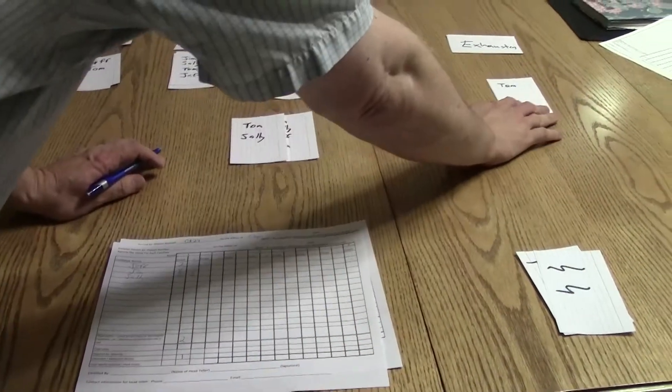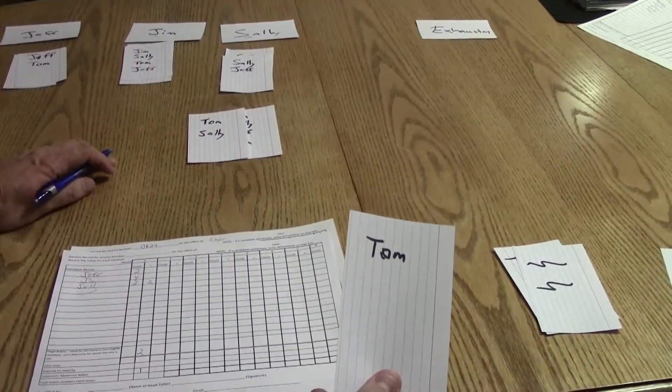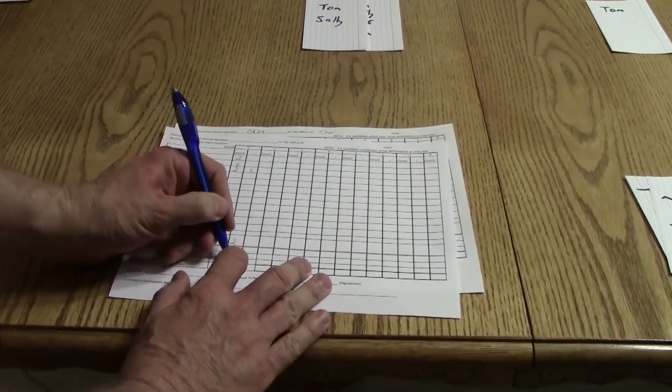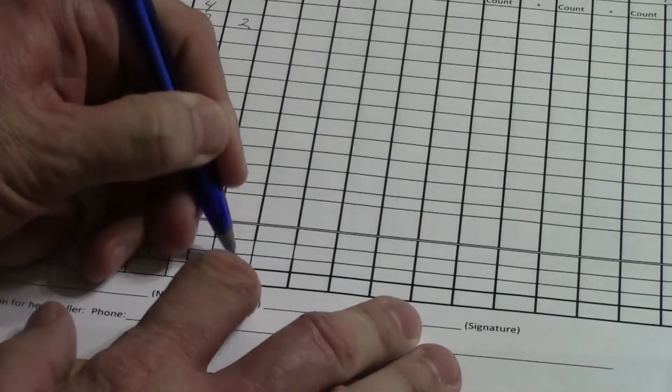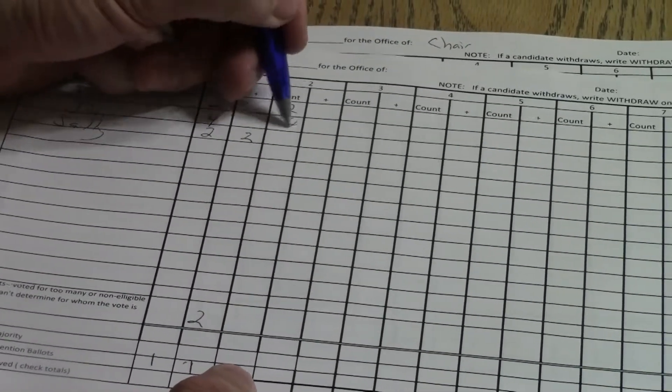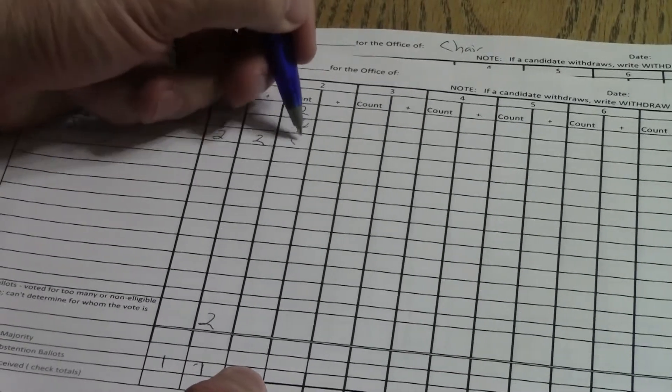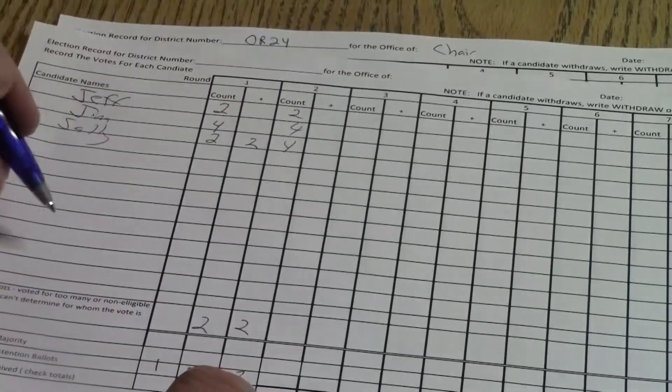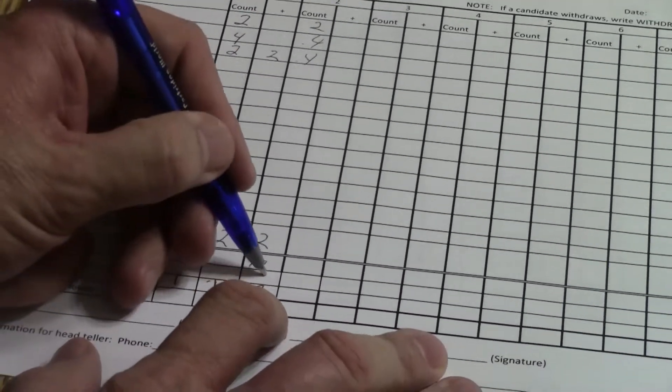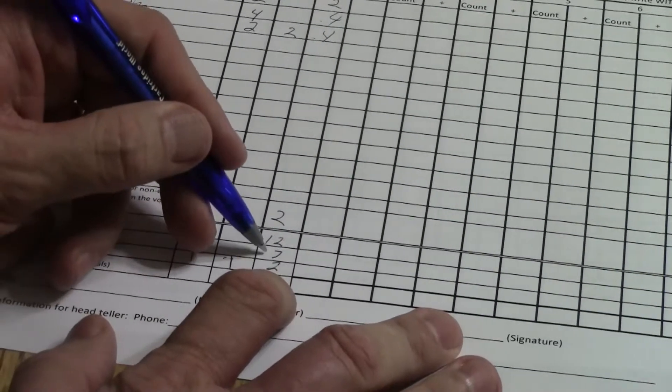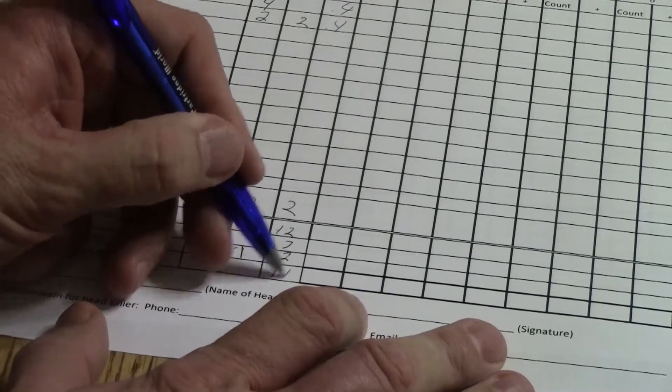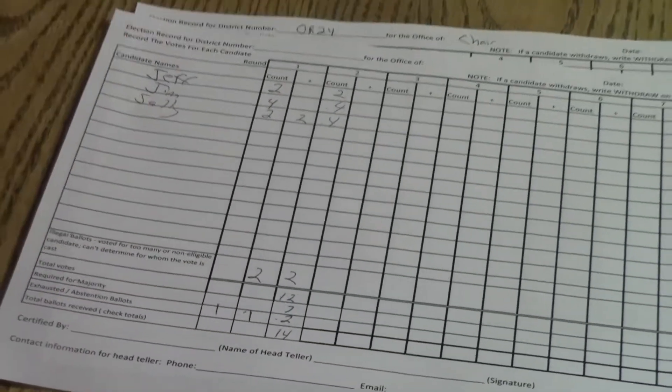And now we also have this one that's exhausted, because there was no second choice after Tom. So that's going to be added to the exhausted count here, making two that are exhausted. We have two votes now for Jeff, four for Jim, four for Sally, two that are illegal. That gives us a total of 12, meaning seven is the majority. And then 12 plus two is 14. That's the number of ballots we started with. So our math is still good.